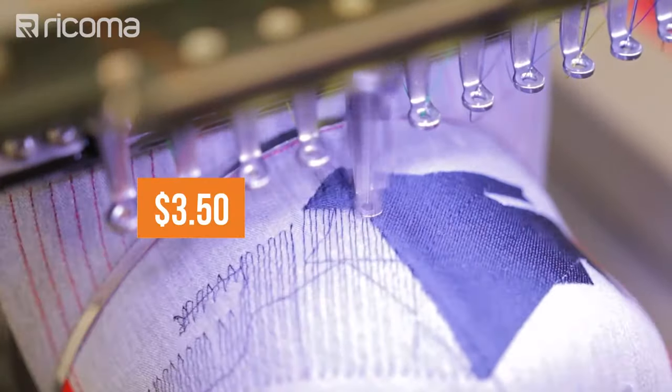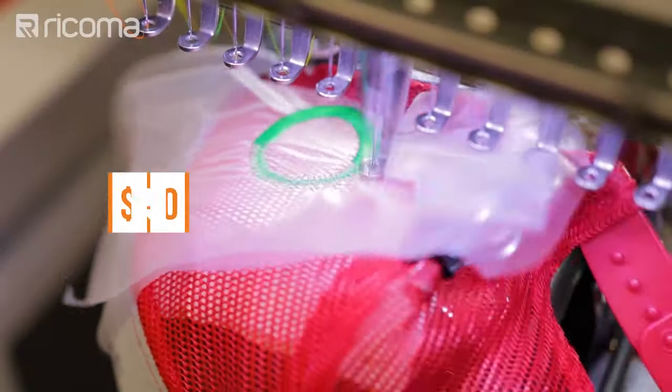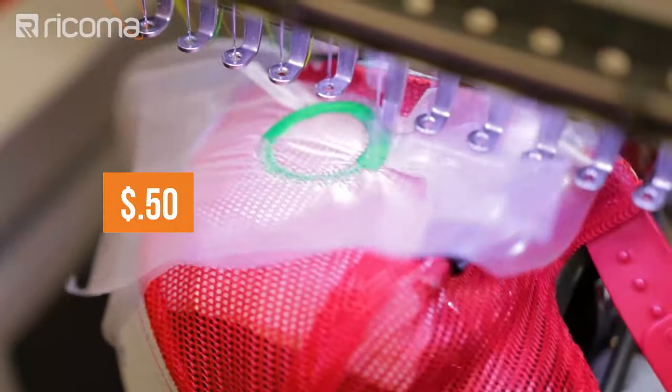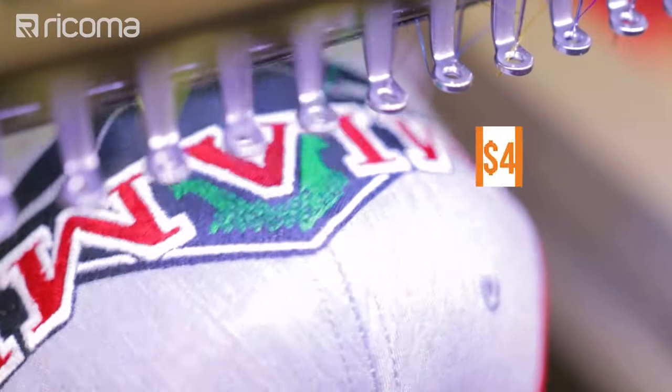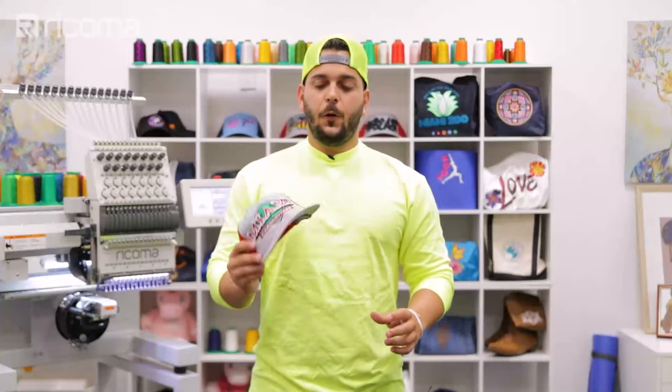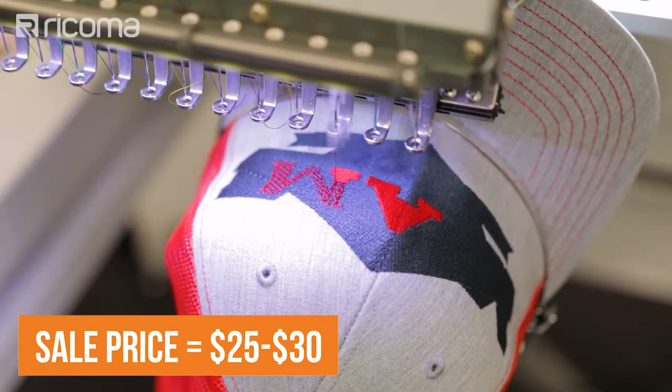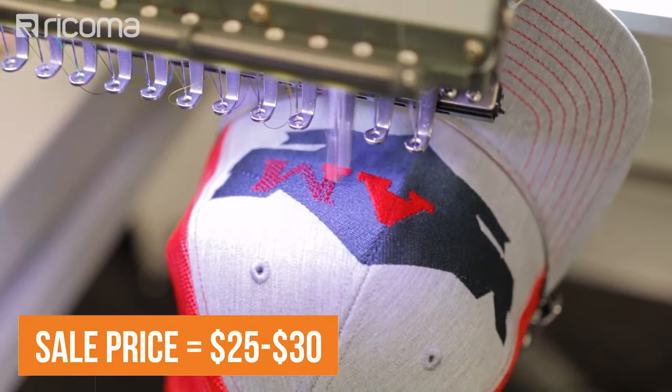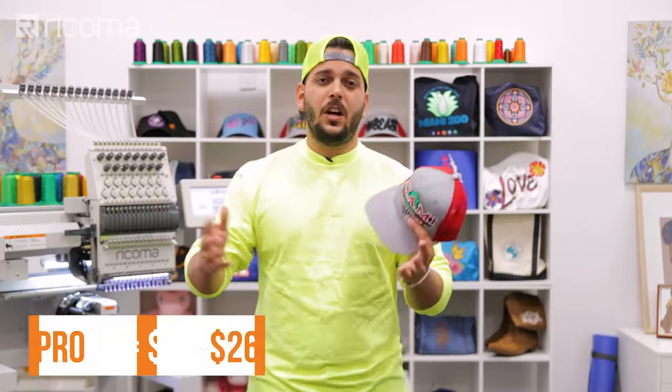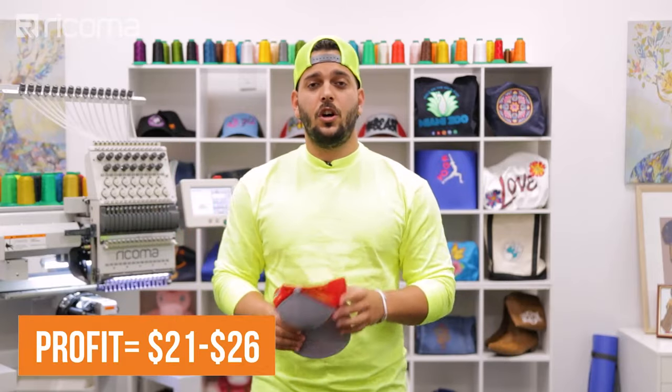Alright, so let's go ahead and jump into the profit potential for this project. We bought these caps from wholesale at $3.50. Then we have to take into account the cost of our stabilizer and our topping. Between both of these, it's around $0.50. So that means that the overall cost of these caps is going to be around $4.00. For regular embroidery on front of the cap, it's around $20 to $25. But since we're doing the side and it's the mesh area of the cap, you can add another $5. That means that you can sell each cap for around $25 to $30, giving you a profit of around $21 to $26, all depending also on the design.